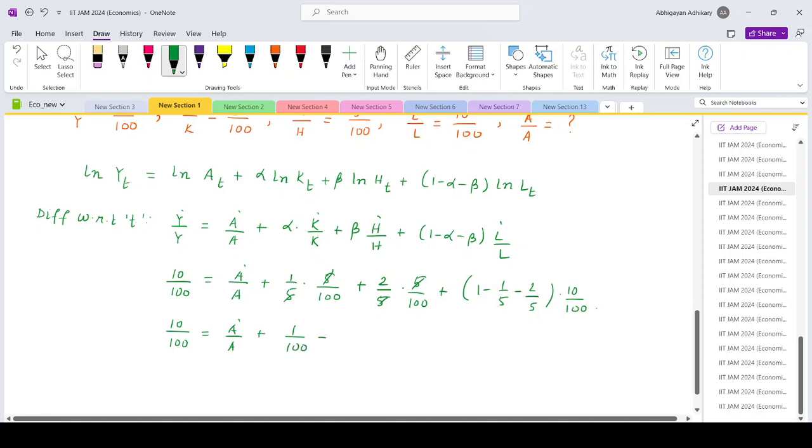Plus 2 by 5 times 10 by 100, which is 4 upon 100.